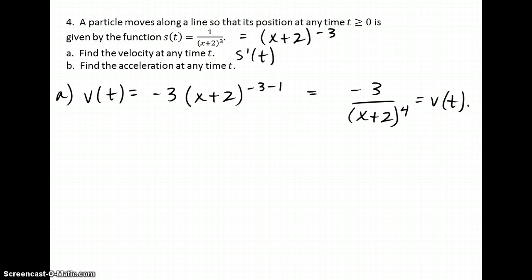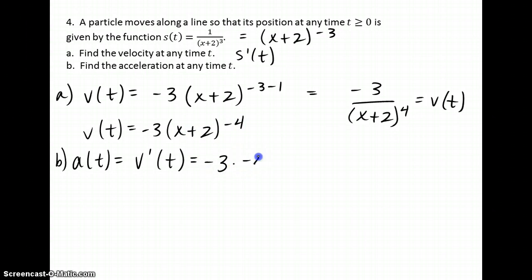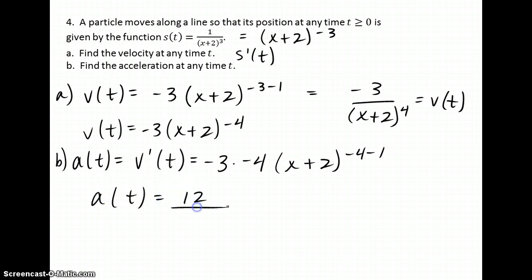To find the acceleration, the acceleration is the derivative of the velocity function. Using the velocity function with a negative exponent, written as a power rule to the negative 4th: negative 3 is a coefficient, bring the exponent down, subtract 1 from the original. The acceleration function is positive 12 over (x + 2) to the 5th power — one fraction, positive exponents.